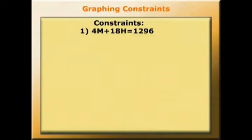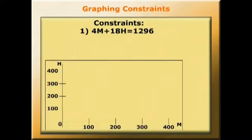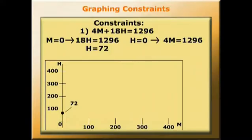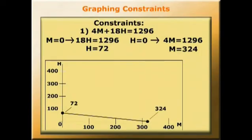The first constraint is the labour constraint. This is an equation of a straight line, so we can find two pairs of coordinates and plot the line on the diagram. The constraint is 4m plus 18h equals 1296. If we set m equal to zero, we get 18h equals 1296, so h is 72. If we set h equal to zero, we have 4m equals 1296, so m equals 324. And we can draw those two points to get our line.